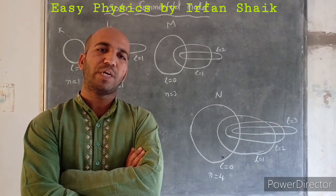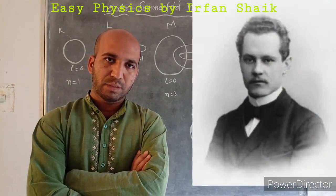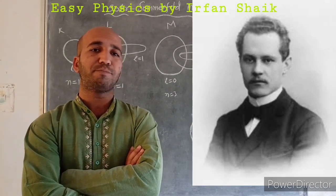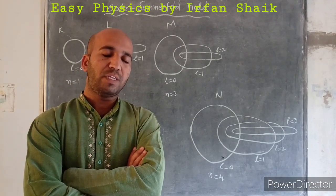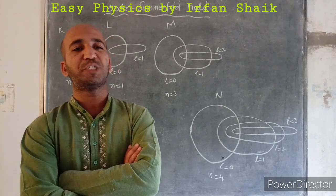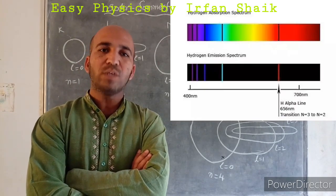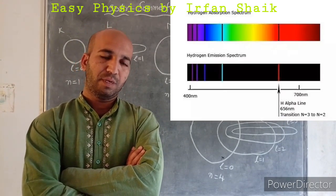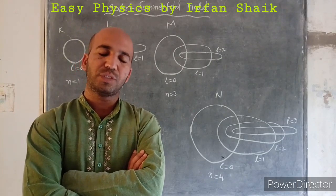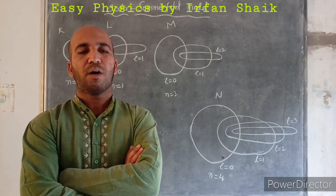To rectify this defect, Sommerfeld — another physicist — tried to rectify the postulates given by Niels Bohr. He took the Bohr atomic model and tried to explain why the spectral lines of hydrogen atom split into so many spectral lines when placed in a high-resolution spectroscope. What Sommerfeld did was add elliptical orbits to each orbit of Bohr.